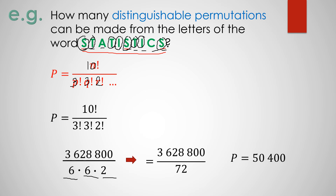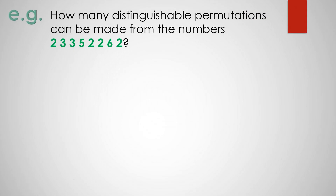This is how we use the formula under distinguishable permutations. Let's have another example. How many distinguishable permutations can be made from the numbers 2, 3, 3, 5, 2, 2, 6, 2? As we can see, there are repeated elements — like elements from our given set — so this falls under distinguishable permutations. We use the same formula, and our n this time is the total number of elements: 1, 2, 3, 4, 5, 6, 7, 8. So our n is 8.